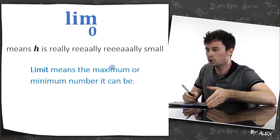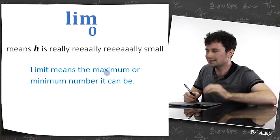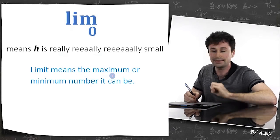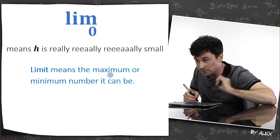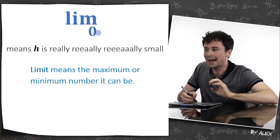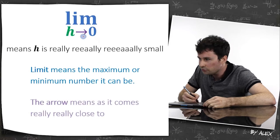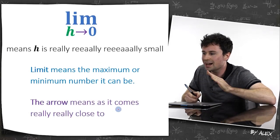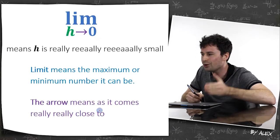Lim stands for the word limit, and limit means the maximum or minimum number that something can be. So in this case, it's the minimum number something can be, and the minimum number h can be is zero, and this little arrow thing here means as it comes really, really close to.